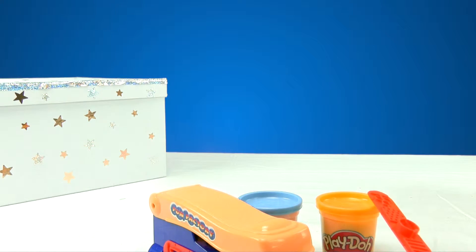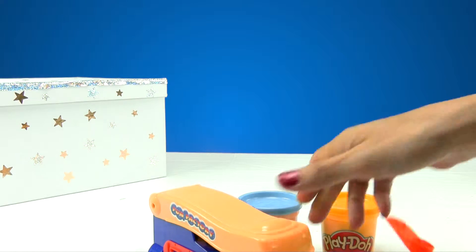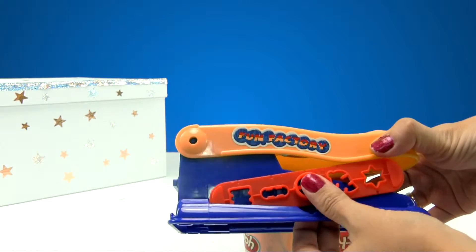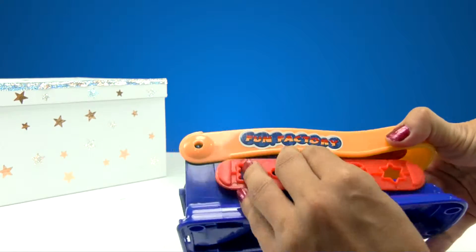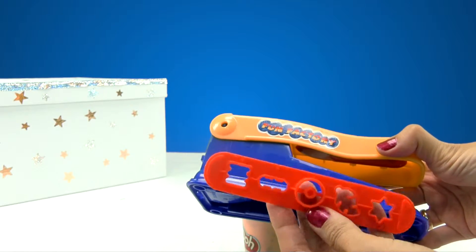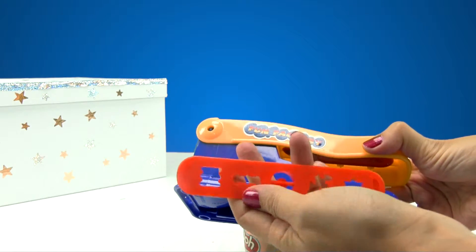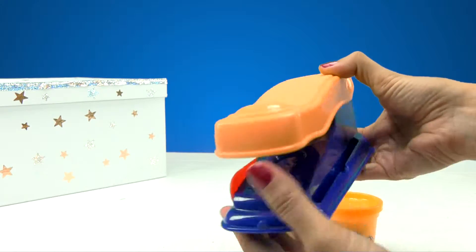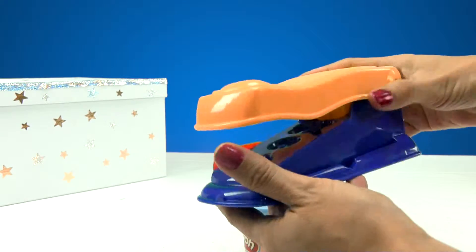Here we've got the Play-Doh machine. And these are the containers of Play-Doh. And these must be the molds we can use to make stuff out of it. Look, you can see them here. We've got a circle and other shapes like this star.